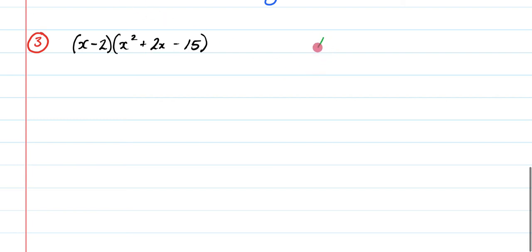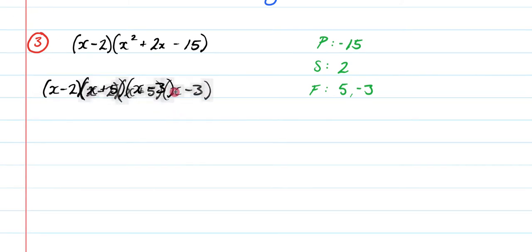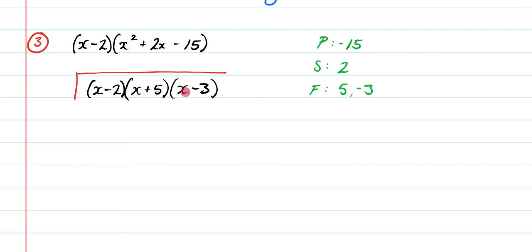Our third step is to factorize this quadratic if possible. So what I need is two numbers that multiply to give me negative 15 and sum to get me two. Now, hopefully you can immediately tell me that those numbers are going to be five and negative three, because five times negative three is negative 15 and five plus negative three is two. So that means I can now rewrite this as x minus two. And then it's going to be x plus five x minus three. And let me just move this over a bit. Perfect.